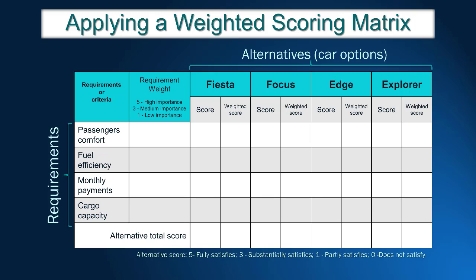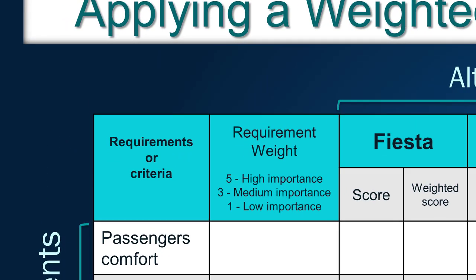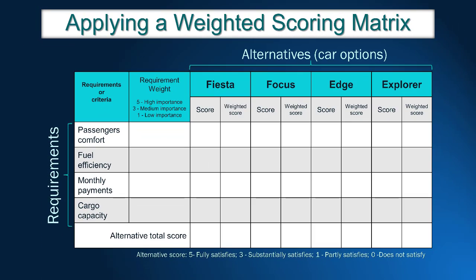The next step: we need to define which requirement is the most important and which is the least important. The challenge is to translate requirement importance into numeric weights. The most important requirement receives weight 5 (high importance); the least important receives weight 1 (low importance). John uses his car every day to work, so full efficiency receives weight 5. Cargo capacity is not that important and received weight 1. Passengers' comfort and monthly payments are graded as 3, meaning intermediate importance.